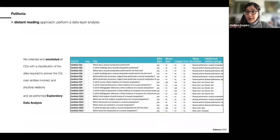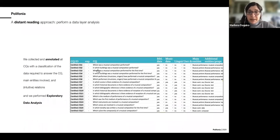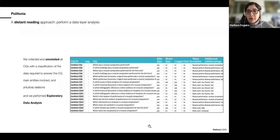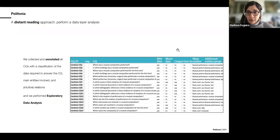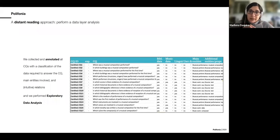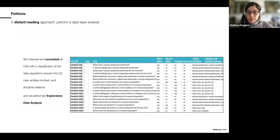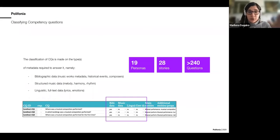So we decided on a different approach for all the other personas. Rather than going through each single persona individually, we grouped them and annotated them. We annotated each competency question with a classification of the type of data needed to answer it. For example, take this one: 'Where was a musical composition performed?' — we classified this question and added another set of annotations, which enabled us to do an exploratory data analysis using a distant reading approach instead of the close reading approach used with Loran.